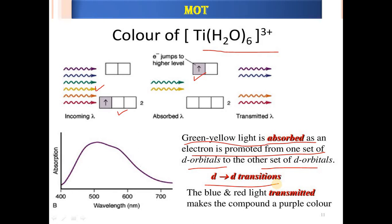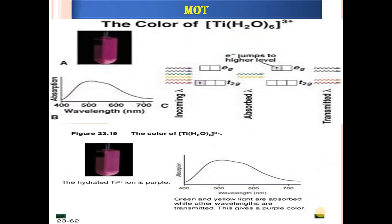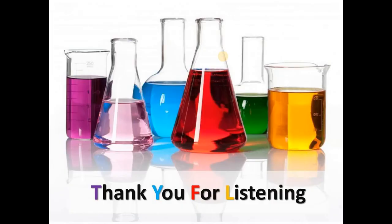In MSc entrance exams, you may be asked: '[Ti(H₂O)₆]³⁺ shows color due to which transition?' — the answer is d-d transition. You may also be asked why [Ti(H₂O)₆]³⁺ shows purple color — it is due to the excitation of the electron from T2G to EG* orbitals. This is the overall summary of the molecular orbital diagram of [Ti(H₂O)₆]³⁺. Thank you for watching this video.